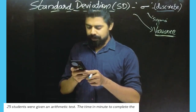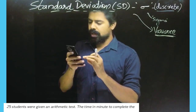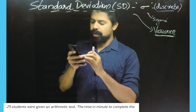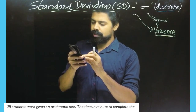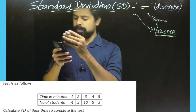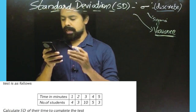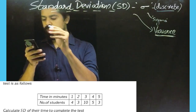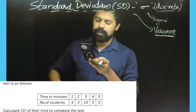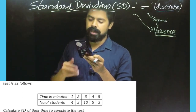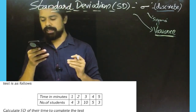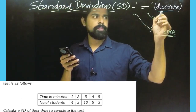The problem is that 25 students were given an arithmetic test. The time in minutes to complete the test is as follows. Time in minutes is 1, 2, 3, 4, 5. We are looking at the number of students — there are 4 students, there are 2 students. We are learning about discrete frequency data.